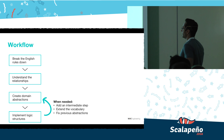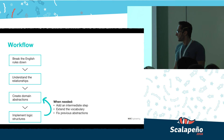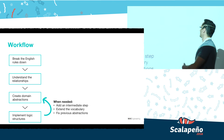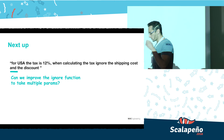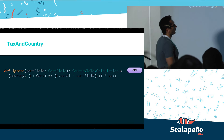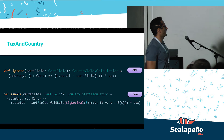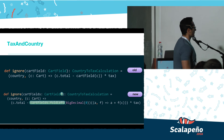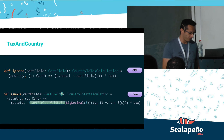Let's take a short break and review: we got the English requirements, understood the relationships, created our domain abstractions, implemented some logic, broke some other logic, and took a step back to fix it. For the third requirement — USA, 7%, ignore both shipping and discount — can we improve the `ignore` function to take multiple parameters? Yes. Using a simple Scala feature called var args, we change the function minimally and now support multiple cart fields to ignore. Since `cartFields` is now a sequence, we use the `foldLeft` combinator to accumulate all the fields we'd like to ignore.